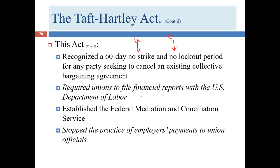We'll see additional documents that have to be filed under the Landrum-Griffin Act. Taft-Hartley also established the Federal Mediation and Conciliation Service, and it stopped employers' payments to union officials. Once upon a time, companies would pay off the union, and the union and employer would basically be cheating the employee — instead of employees getting wage or benefit increases, the employer would pay the union, and then the union would not negotiate quite so hard on behalf of the employees. That behavior was always immoral but wasn't necessarily illegal until Taft-Hartley.